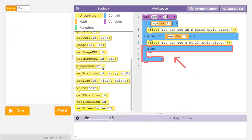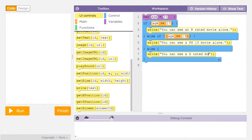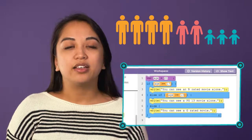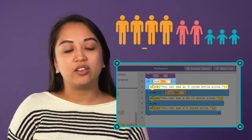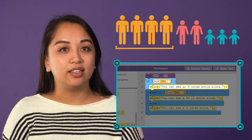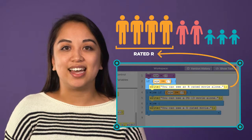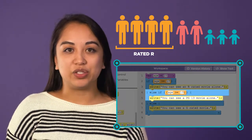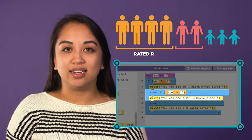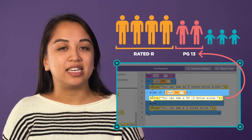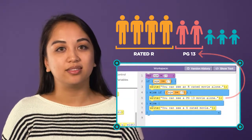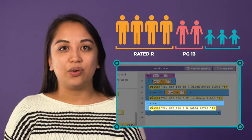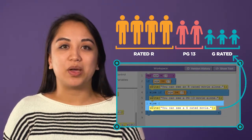An else if statement is another condition that a program checks only if the previous if statements were false. So if age is greater than or equal to 17, write that user can see an R-rated movie alone. Else if the age is greater than or equal to 13, write that the user can see a PG-13 movie alone. Else, write that the user can see a G-rated movie alone.